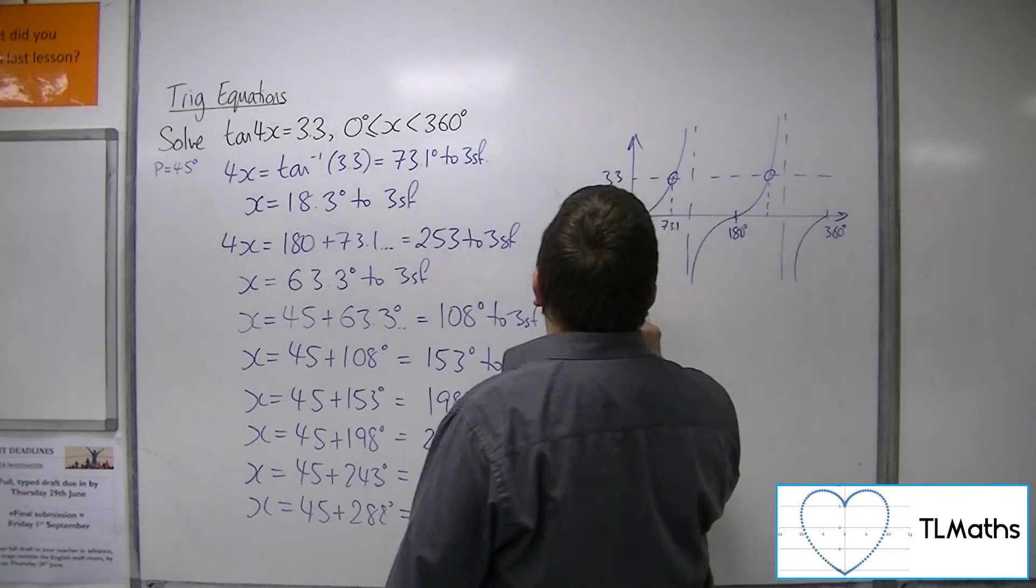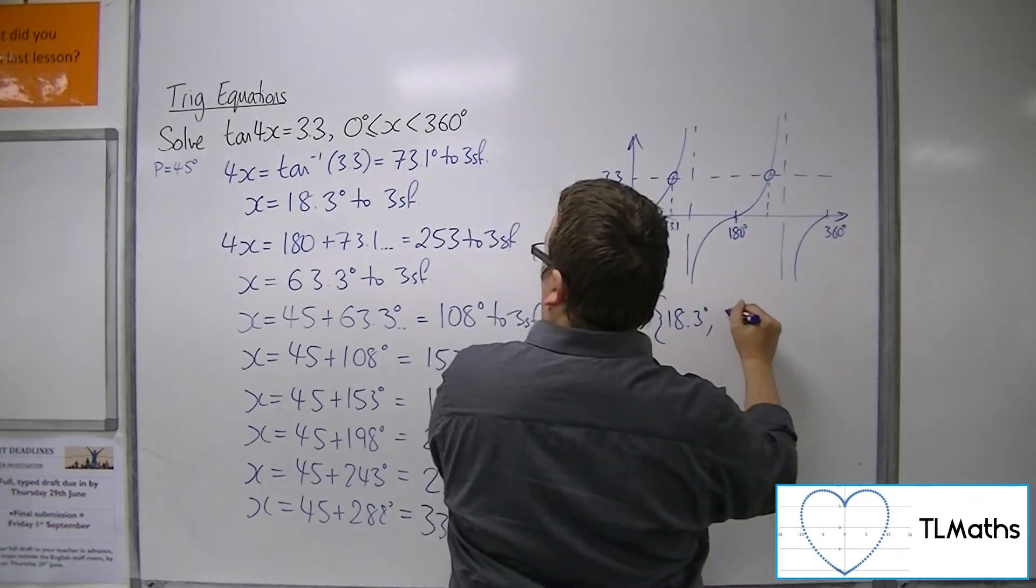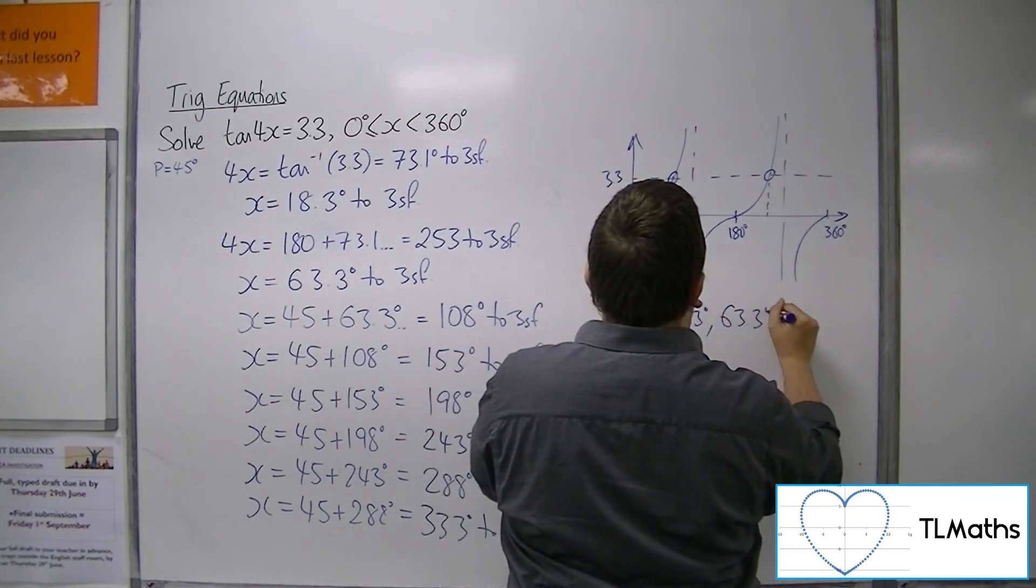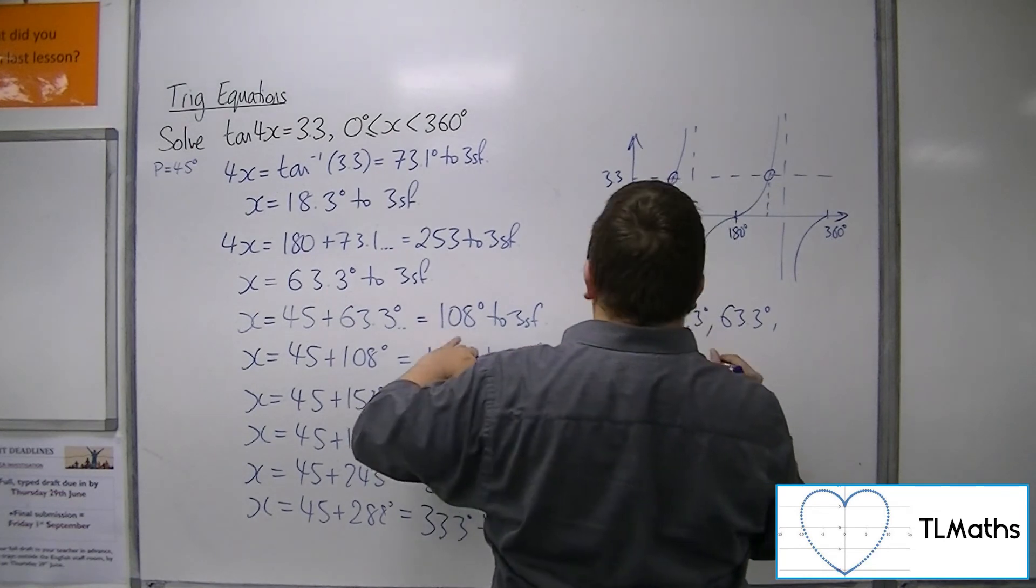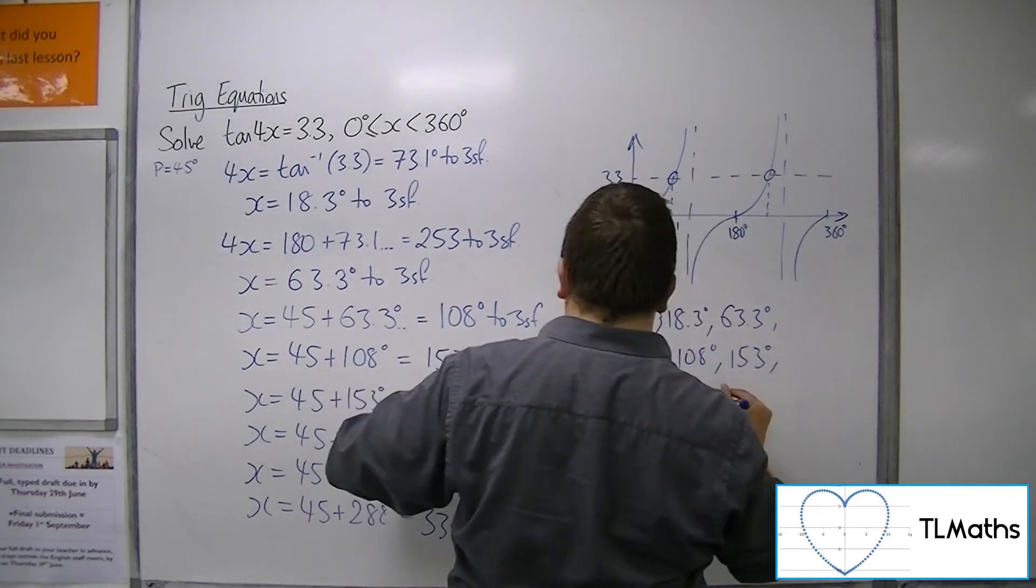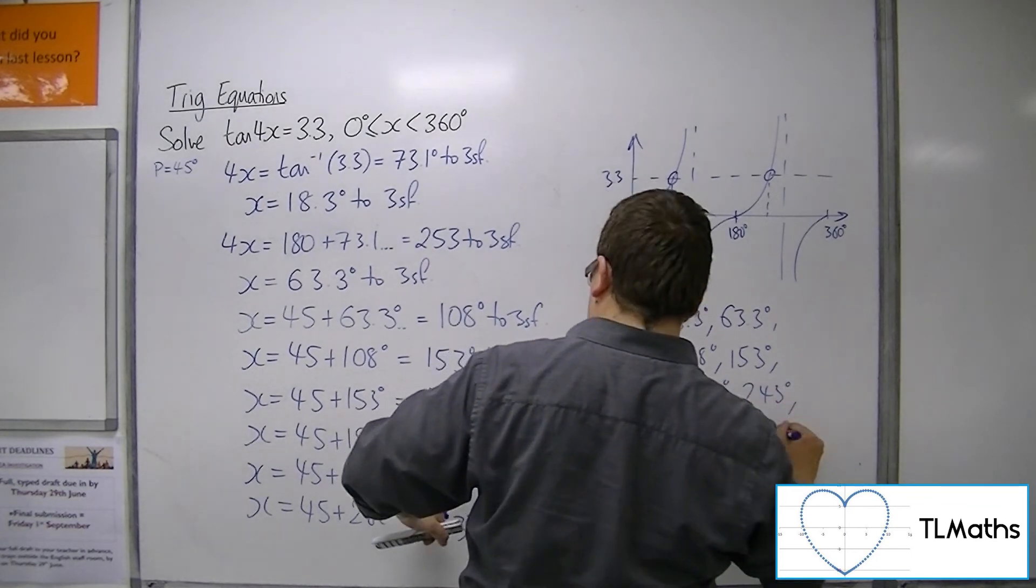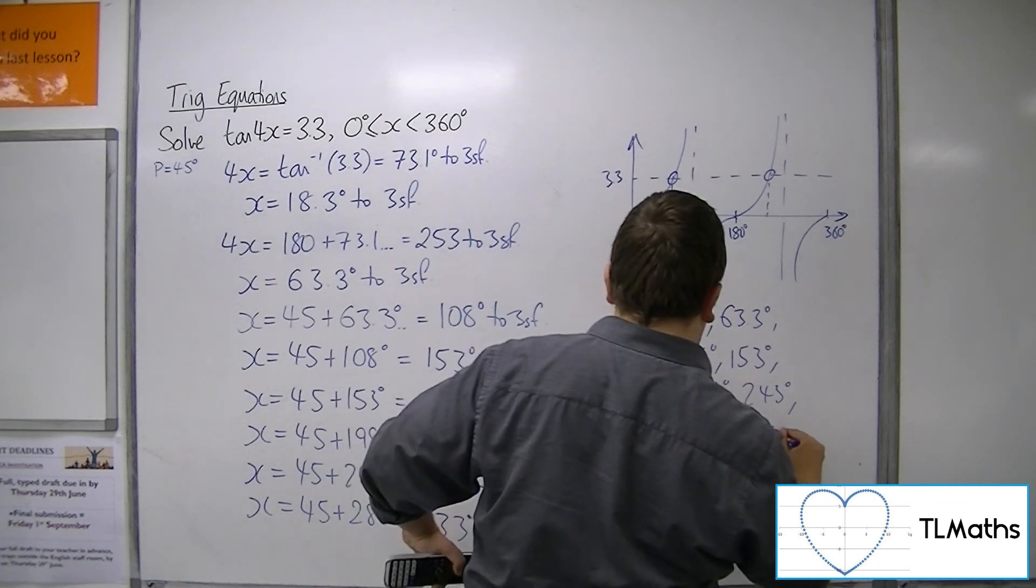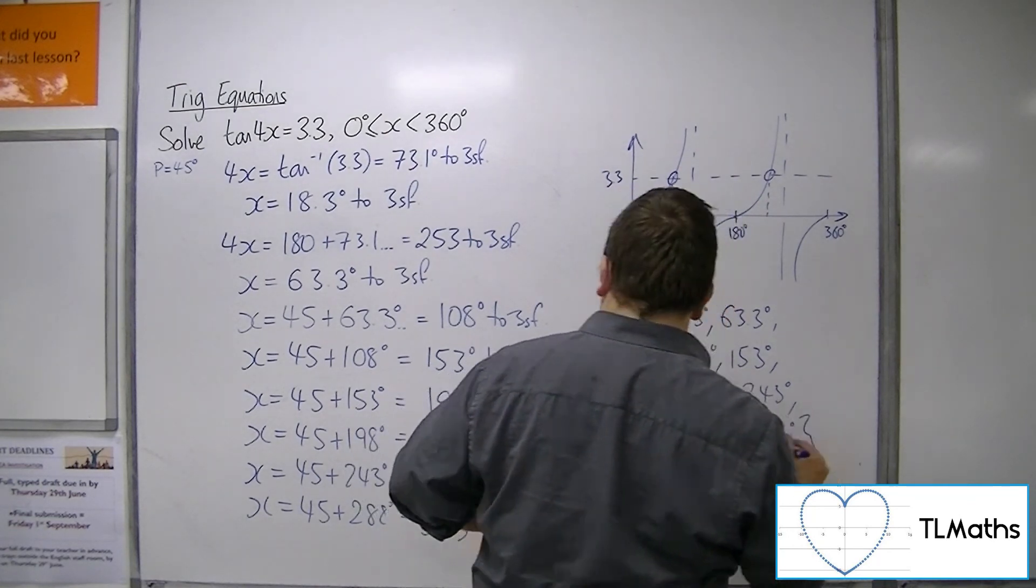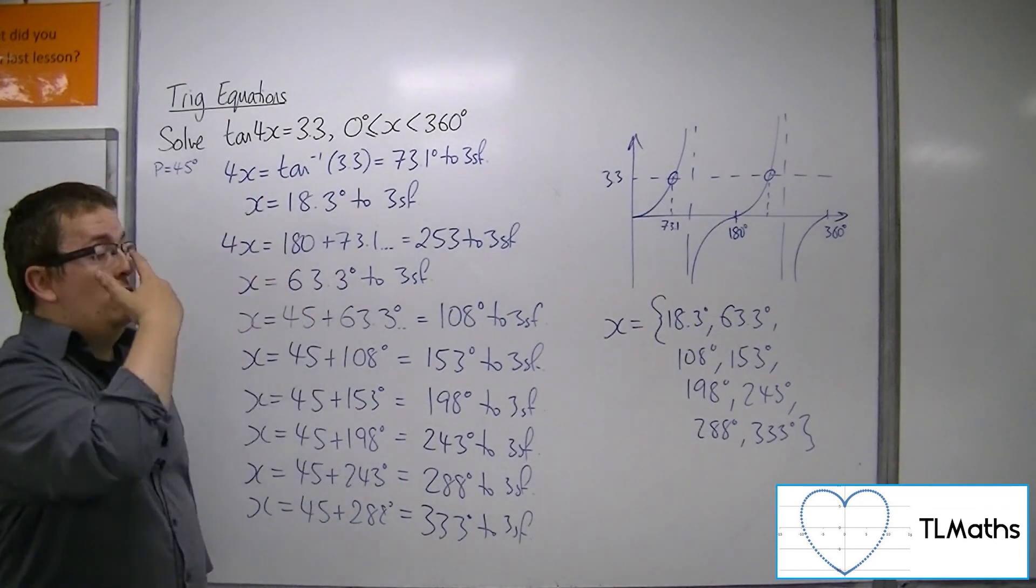So we have 18.3 degrees, 63.3 degrees, 108, 153, 198, 243, 288, and 333. And they are the 8 solutions that solve the original problem.